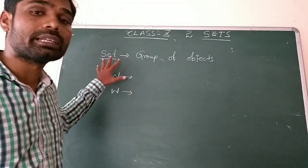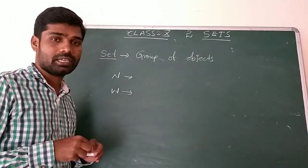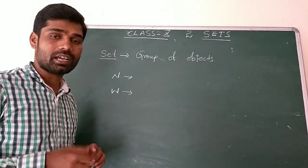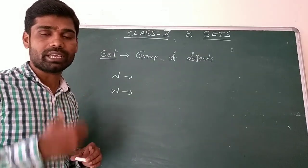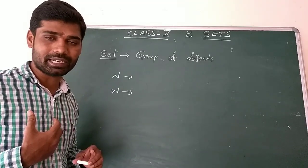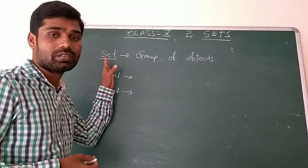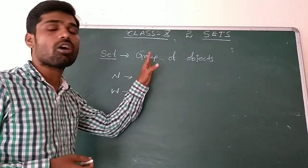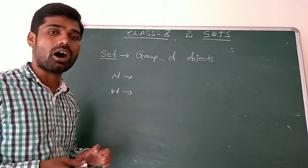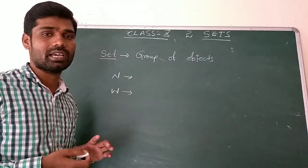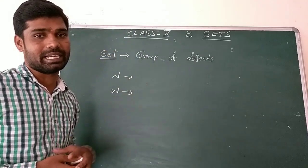First of all, what is a set? A set is nothing but a group of objects. For example, we have many parts in our body, so our body is nothing but a set of body parts — it consists of many parts. So the definition: a set is a collection of objects, or group of objects, or things.